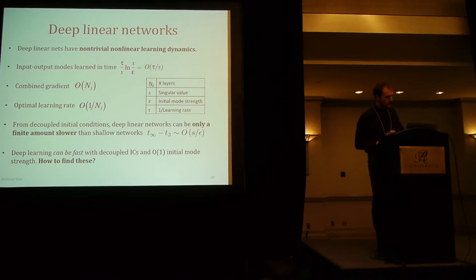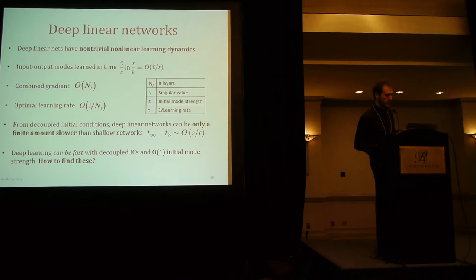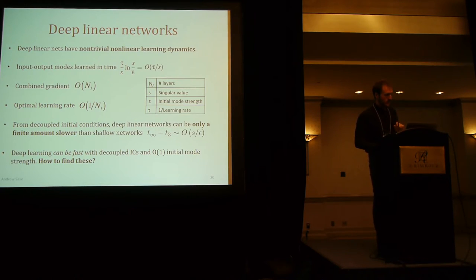Just a midway summary: deep linear networks do seem to have non-trivial learning dynamics. Each mode is learned in time proportional to 1 over the size of the singular value. The optimal learning rate scales as 1 over N. And these networks can learn reasonably quickly, provided you have these special decoupled initial conditions. The question we'll turn to now is: how do you find these good decoupled initial conditions?